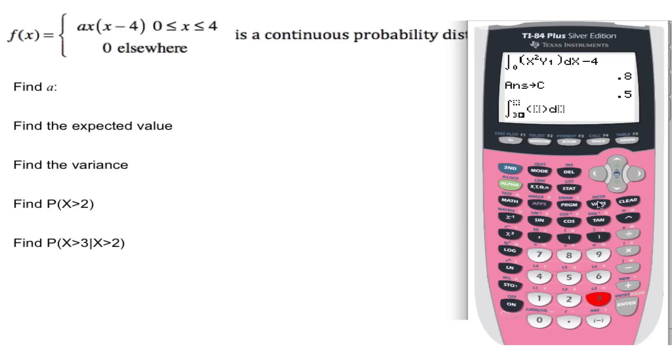9 for integral, 3 to 4 of vars, yvars, function y1, dx. So that's the probability of 3 to 4, but it says given greater than 2, so we need to divide by greater than 2. And then that's either in C, or you can just type in 0.5. So the probability of x greater than 3, given that you know it's greater than 2, is 0.3125. Thank you.